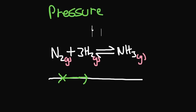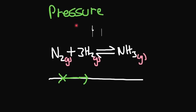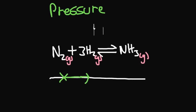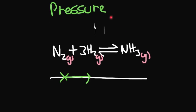Now, pressure only affects reactions with gases. And it also only affects reactions where there's an uneven number of gaseous moles on either side. So if there were four gaseous moles on this side and four gaseous moles on this side, pressure would have no effect.